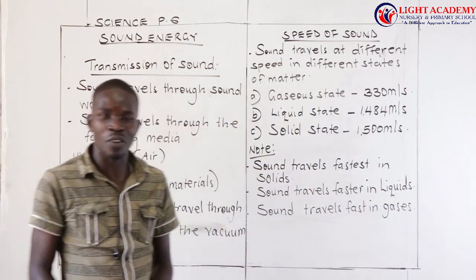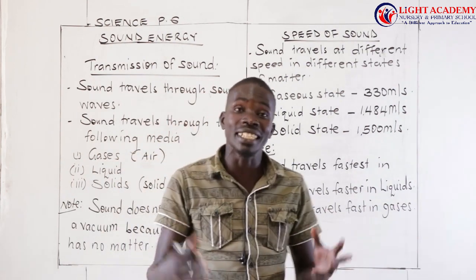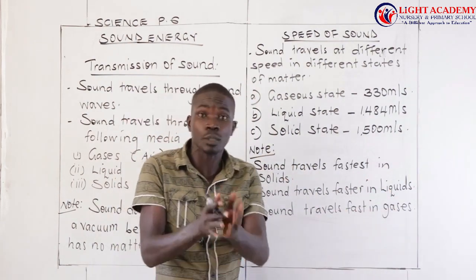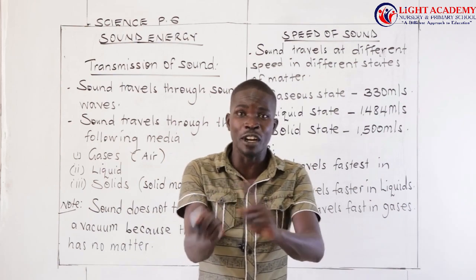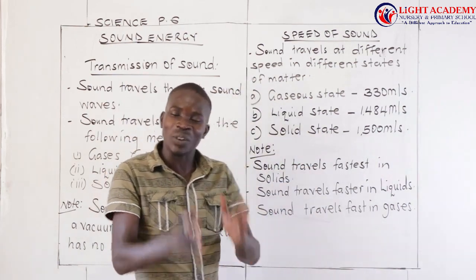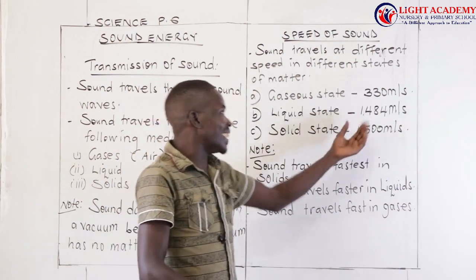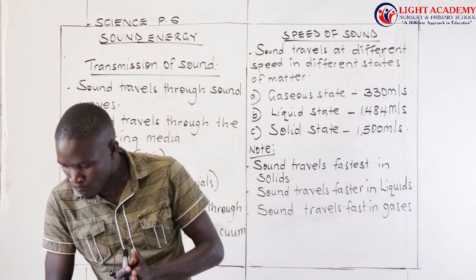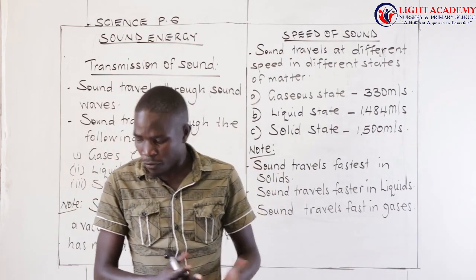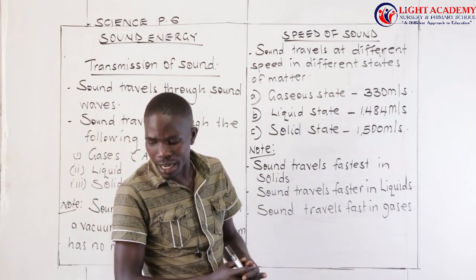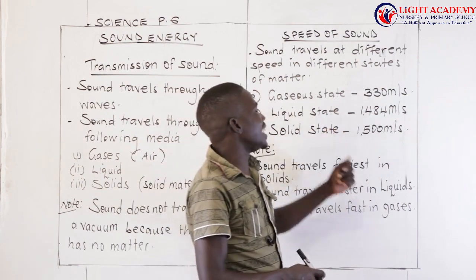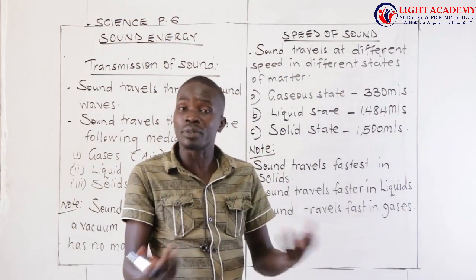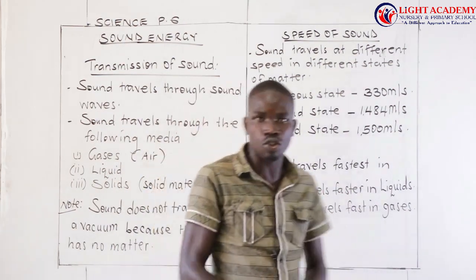We can see by what is already here: the speed of sound — how sound travels. It is very fast in the solid state at 1,500 meters per second, then faster in the liquid state at 1,484 meters per second, and then in the gaseous state at approximately 330 meters per second. Sometimes there is a speed difference, but this is our lesson today.